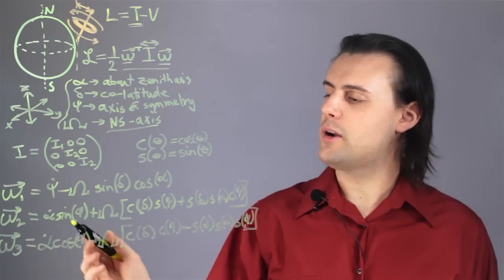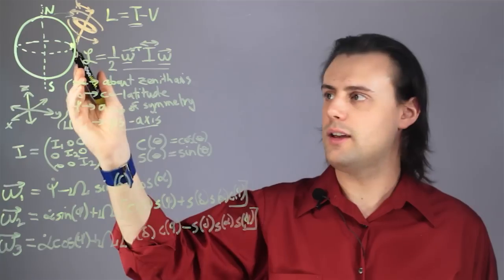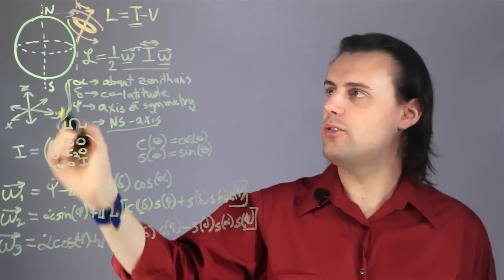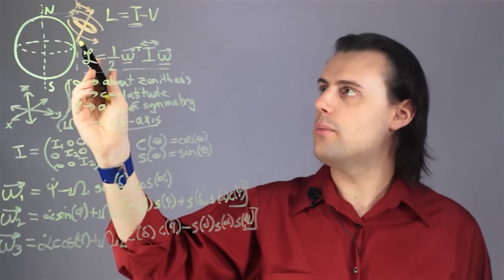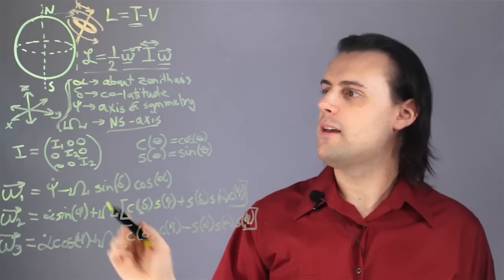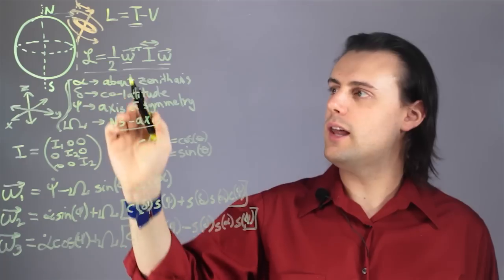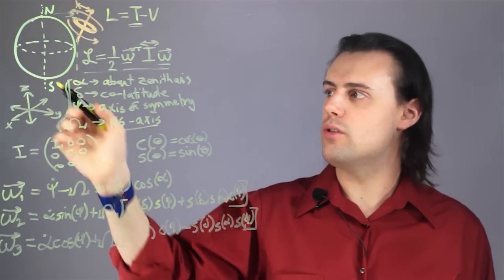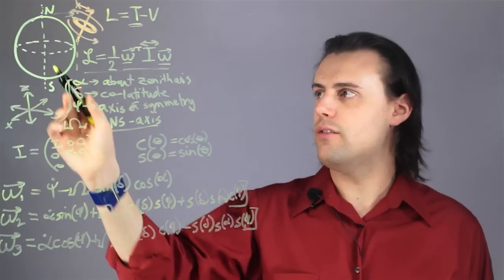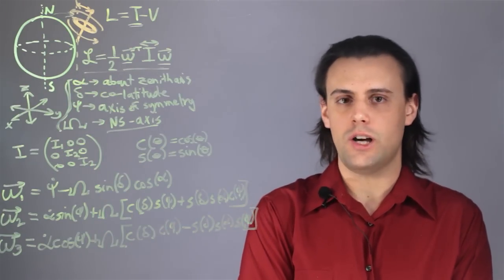This is a complicated looking expression, but that's because there are various coordinate transformations that have to take place in terms of these various angles to properly describe the dynamics of this gyroscope and gyrocompass. If you can solve for the equations of motion with this Lagrangian, then you can utilize that knowledge to determine a way to navigate relative to the north-south axis of a rotating planet. My name is Walter Unglaub, and this is Gyrocompass Theory. Thank you.